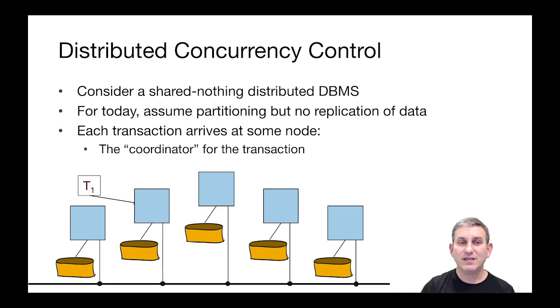The transactions come in and they arrive at some node, so this transaction T1 here came in at the node that it's connected to, and that node will be appointed as the coordinator for that transaction. You can set up your system so there's exactly one node that's the coordinator for all transactions, or you can set up a system where any node can be the coordinator for a given transaction. The point is, when the transaction comes in, it's assigned a single coordinator.